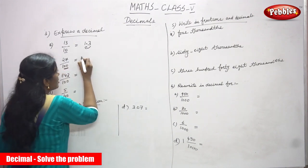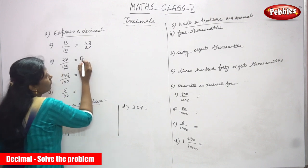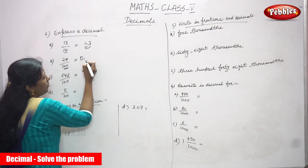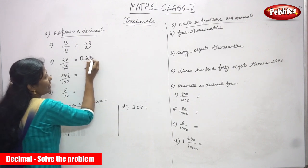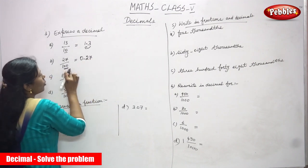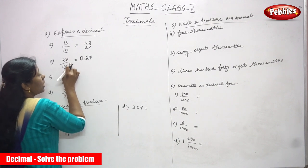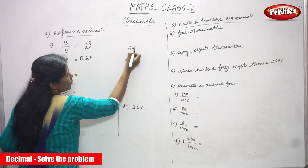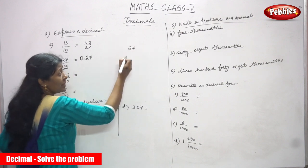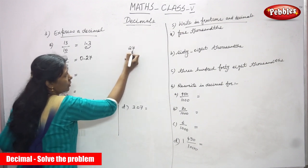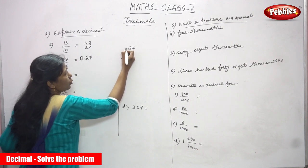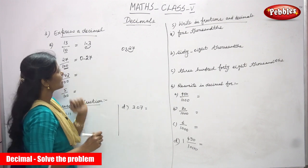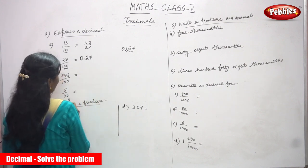You have to put a decimal point. First write 0, then put a point, then write 27. Moving the point 2 digits from right to left, the answer is 0.27.